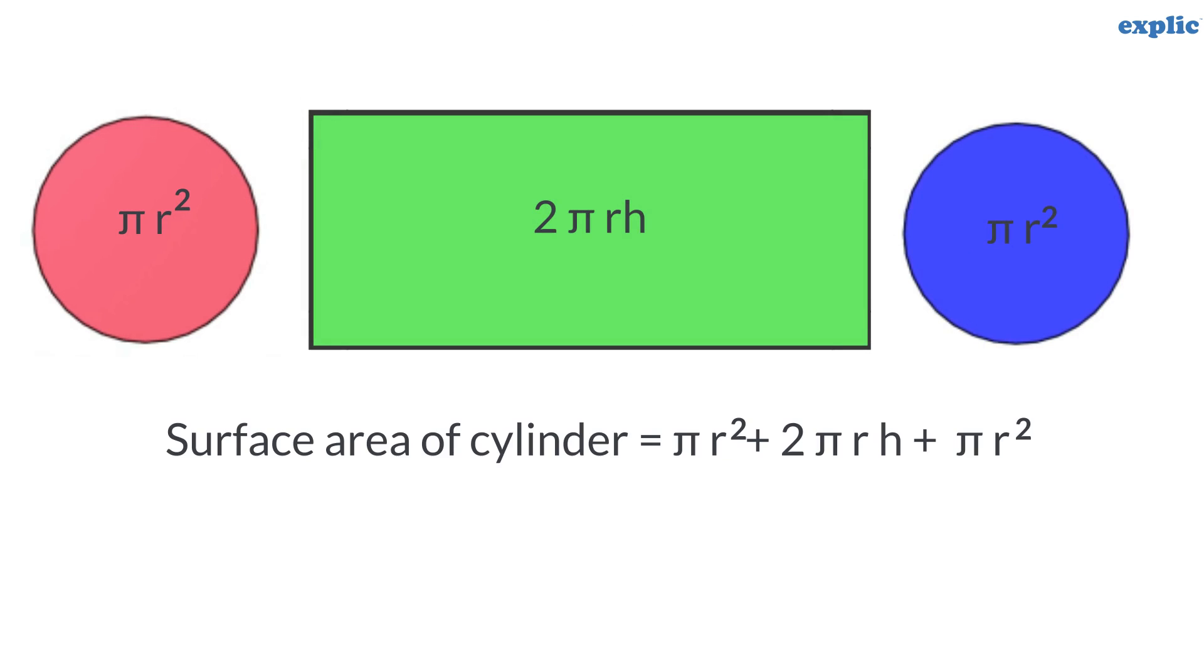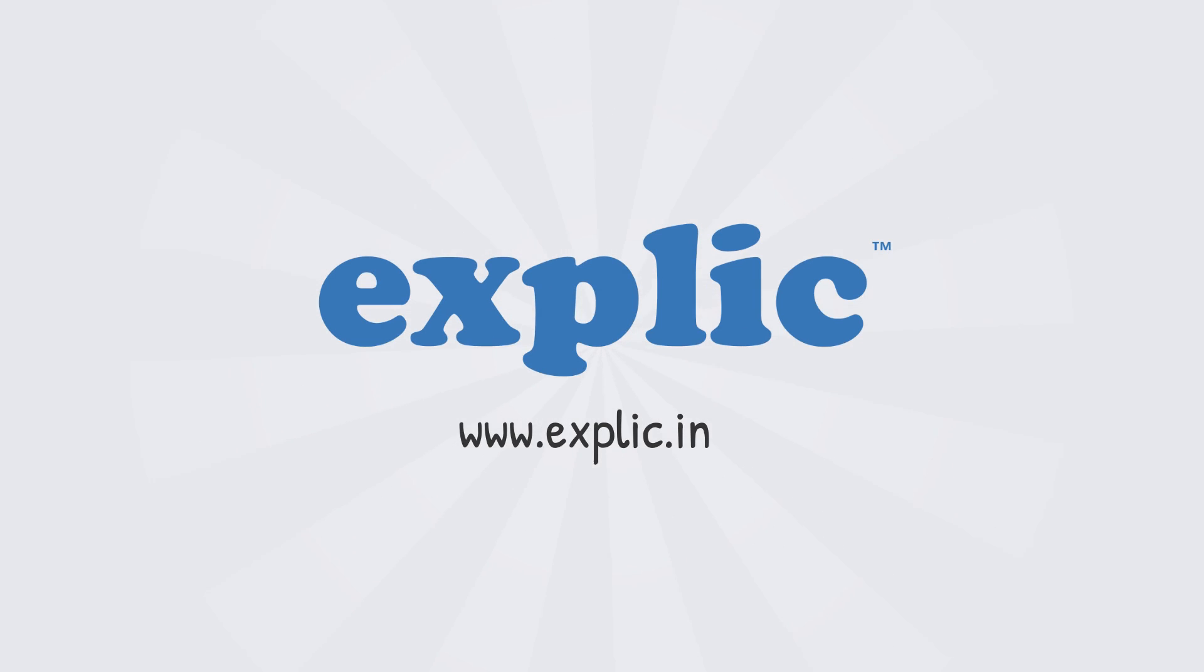Hence the surface area of the cylinder is 2PiR multiplied by R plus H.